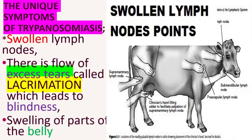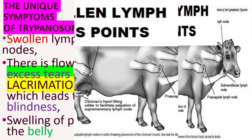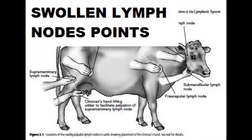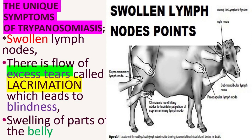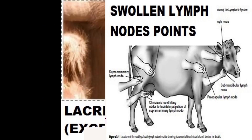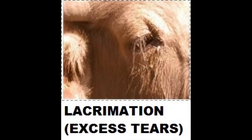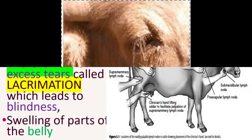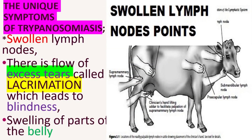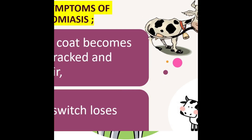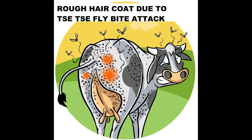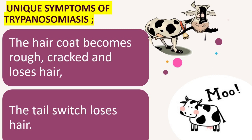The most unique symptoms of trypanosomiasis are swollen lymph nodes, and flow of excess tears called lacrimation, which can lead to blindness. There is also swelling of parts of the belly, and the hair coat becomes rough, cracked, and loses hair. The tail switch also loses hair.